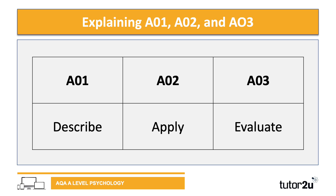AO2 — some of you might be familiar with that in terms of it being evaluation for GCSE. At A-level psychology it's actually apply. This is whereby you may be given a stem or scenario and you're asked to explain the behaviour of that stem scenario in terms of the knowledge that you know. So it's really about linking the AO1 with the AO2 — you're applying your knowledge to a scenario.